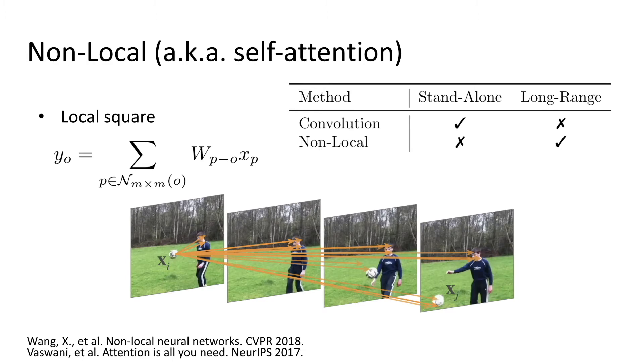Recently, non-local neural networks, also known as self-attention, have been proposed to address this limitation. Contrary to convolution, non-local allows global connections in one layer. For example, here we show four frames of a video. The output of xi is the weighted average of the features from all positions. It captures long-range interactions with other far-away pixels xj in other frames. This complements convolution, which models local relations only.